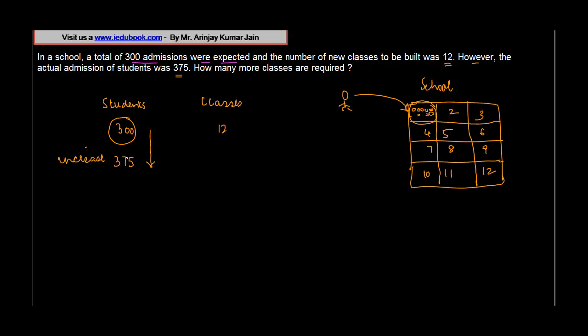Now, if the number of students have increased, obviously what will happen? Will you require less classes? No, you will require more classes. Why? Because these 300 students would have gone and adjusted in all these classes, but there are 75 more students who need to come and fit in somewhere. So you need to build additional classes for them. Now, how many classes? That we don't know, and that is what we have to find out.